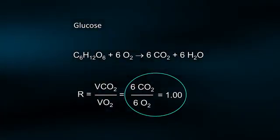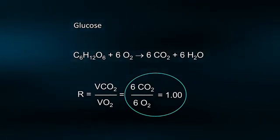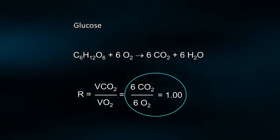With the complete oxidation of glucose, the primary carbohydrate used by muscles during exercise, the respiratory exchange ratio is 1.0.